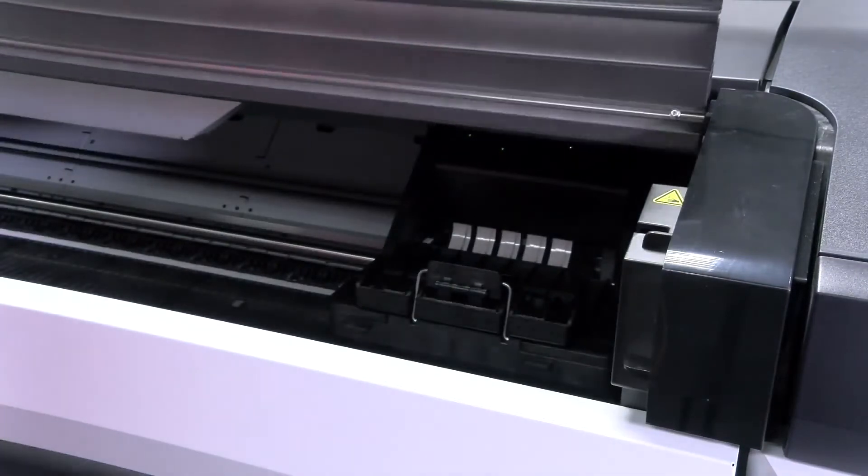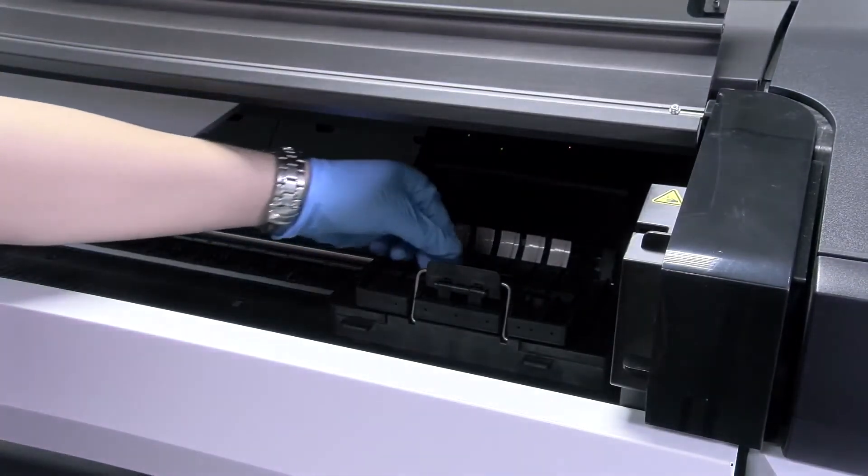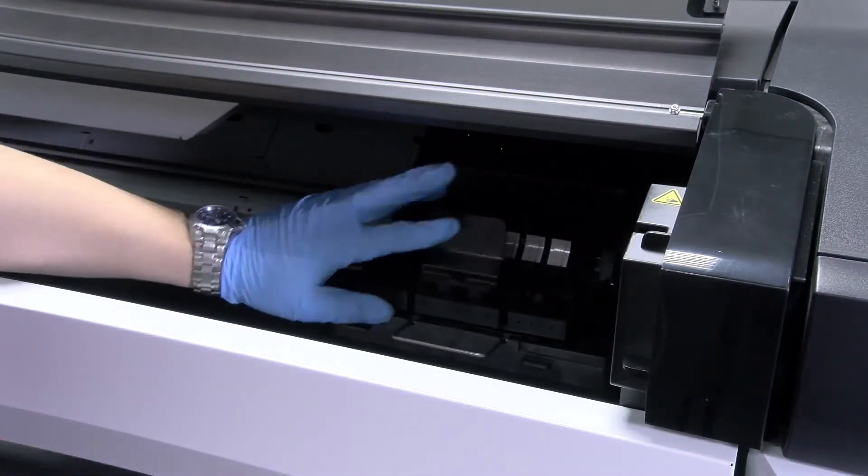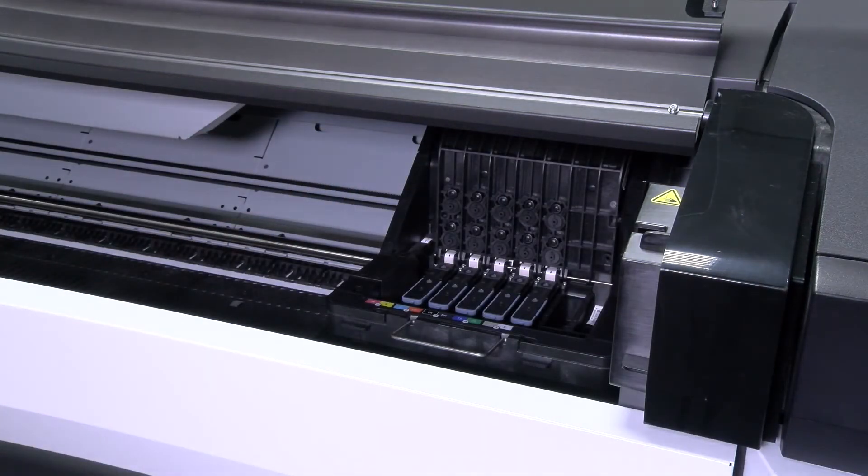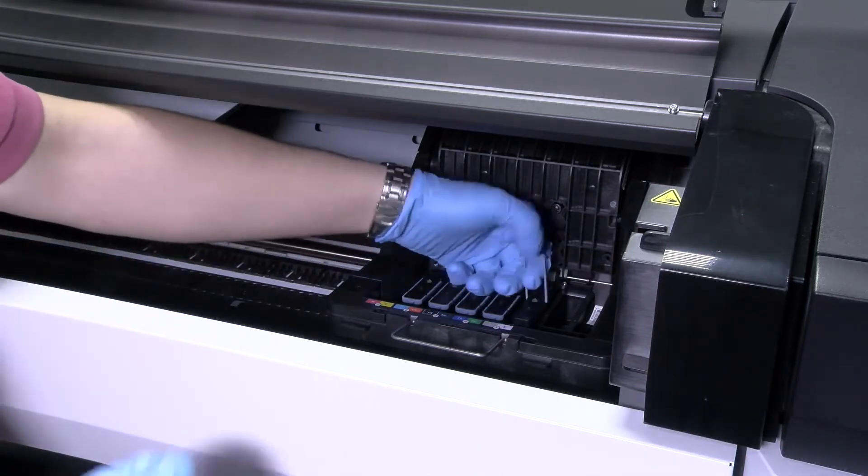Open the front cover and lift up the latch on top of the carriage. Lift up the cover to access the printheads. To remove a printhead, lift up its blue handle, then use the blue handle to gently disengage the printhead.